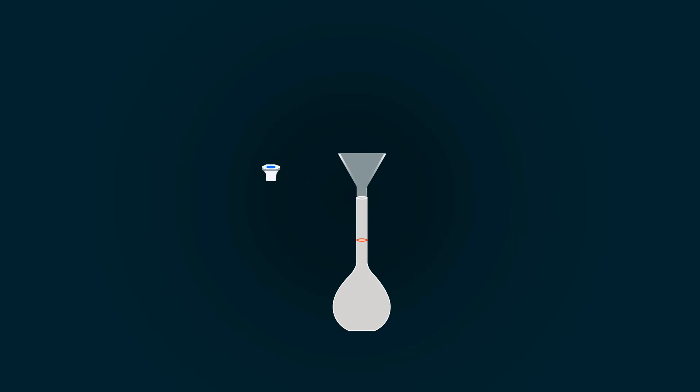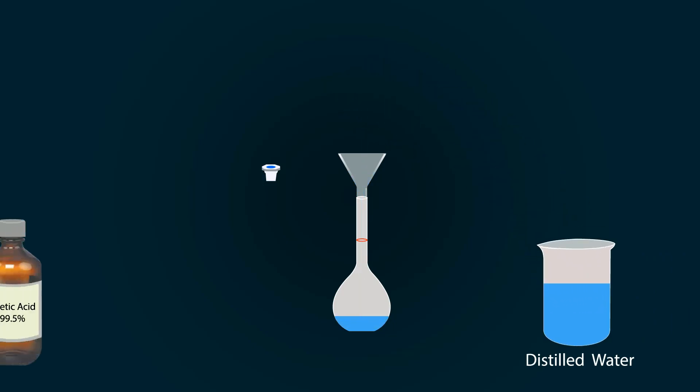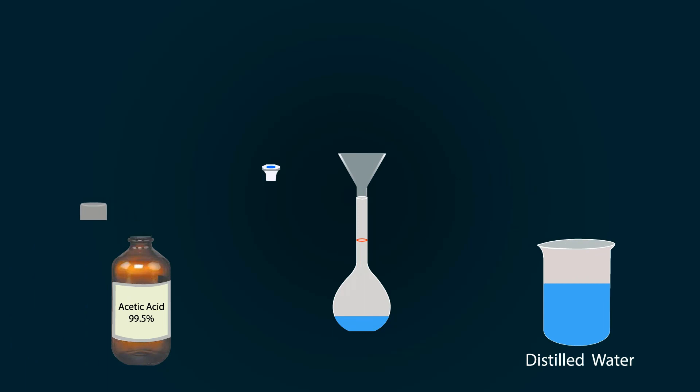Now please put some distilled water into it. Do not add acetic acid directly into the volumetric flask because your volumetric flask may burst. Now you can start adding acetic acid with the help of pipette. Pipette out the required volume